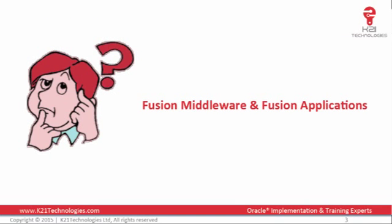To add to Kishore's point: Oracle Fusion Middleware is a suite of products that includes Oracle WebLogic Server, Oracle SOA Suite, WebCenter Content, WebCenter Portal, Identity and Access Management Suite, Oracle Web Tier, and other components. It sits between the Oracle database and your business applications. You deploy and build business applications using Oracle Fusion Middleware, whereas Oracle Fusion Applications is a suite of business applications built on top of Oracle Fusion Middleware.